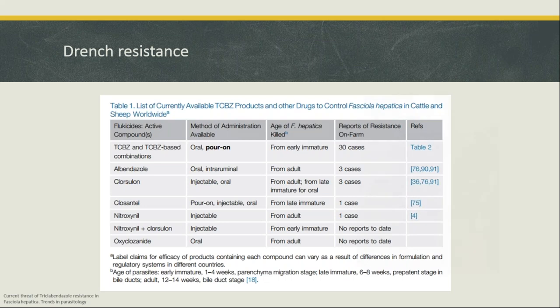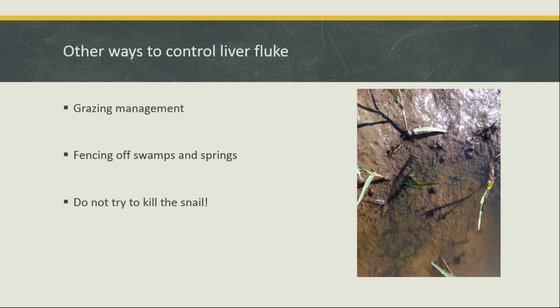One of the best ways to control liver fluke is grazing management. We know where the snails are — without the snail, there is no liver fluke. You can see snails sitting right along the edges of gullies and creeks. If we restrict grazing in those areas we control liver fluke. Fencing off springs and gullies is probably one of the best ways to do it; however, on many farms that's not practical due to steep terrain or economic viability.